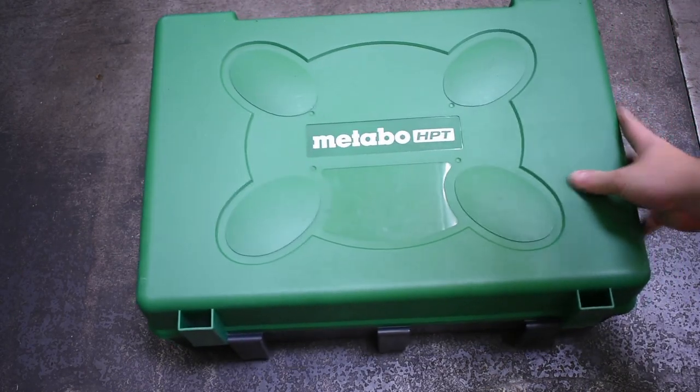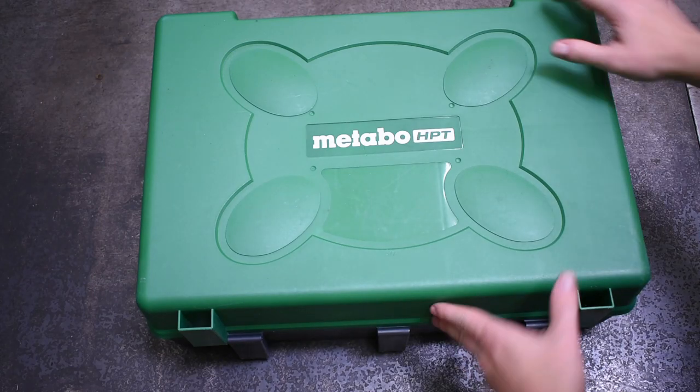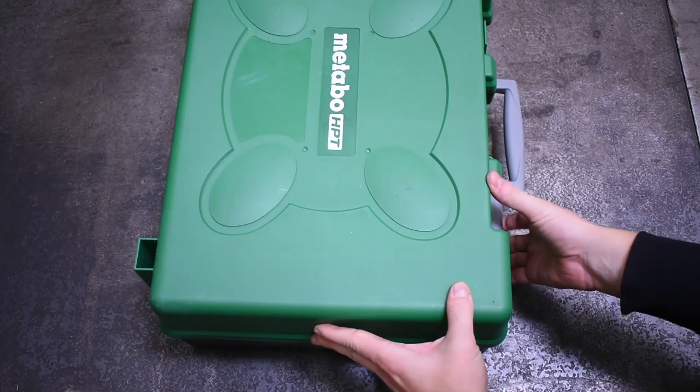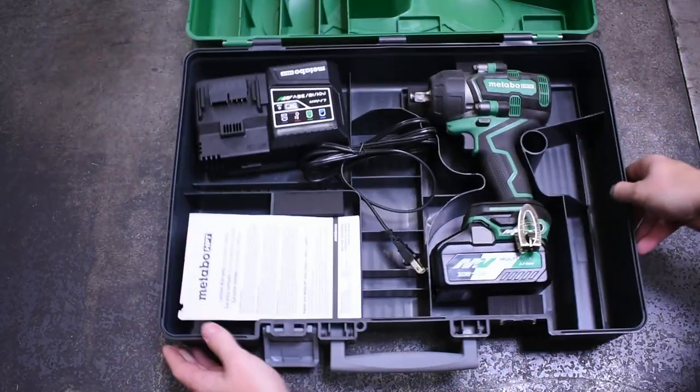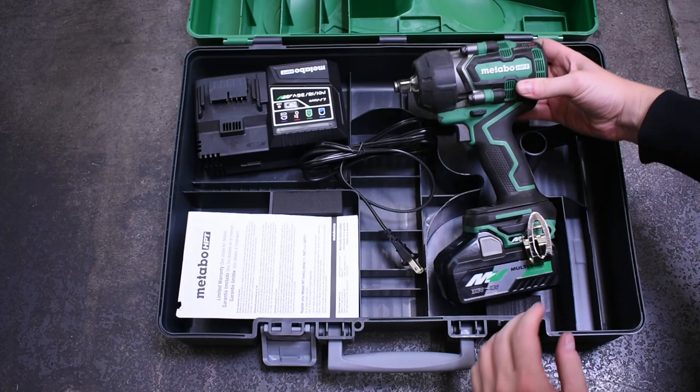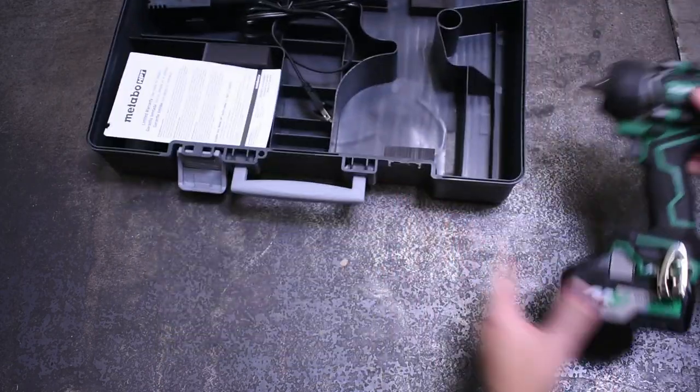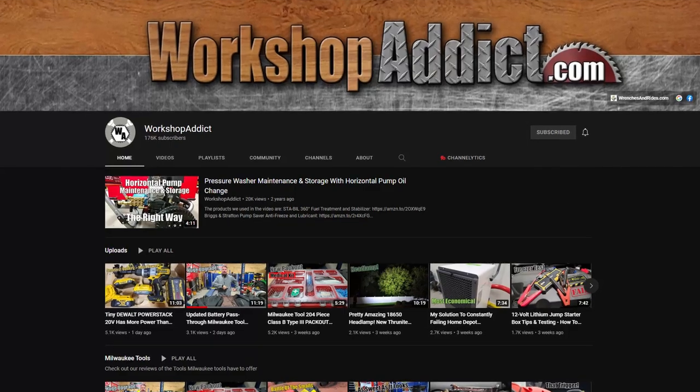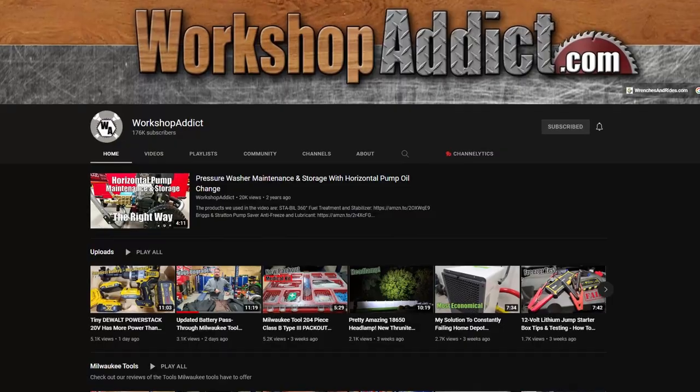Welcome back to the torque test channel. I'll go ahead and make it clear from the outset that Metabo HPT, or Hikoki as it were, has no idea that we got this little guy, the new Metabo HPT WR36DE 36 volt mid-torque. And I say new, but really it's not even out yet. We got this one from Brian from Workshop Addict, who got it from Metabo HPT. Be sure to check out his channel below and his video on this impact also out today. We owe him a big thanks for the chance.